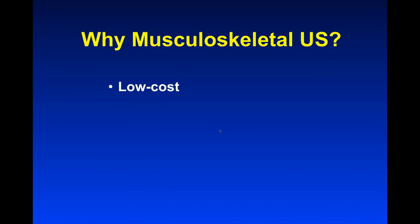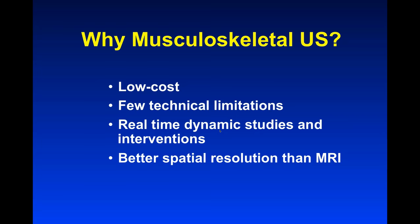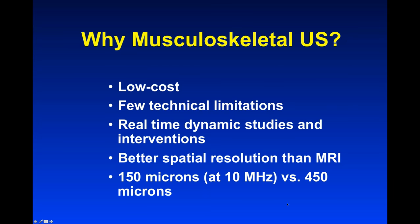First of all, it's a low-cost tool, and in this era of cost containment that's a very important benefit compared to MRI. It has few technical limitations — you can get good studies on just about everybody. You can perform real-time dynamic studies and interventions. It also has better spatial resolution than MRI. Even using a 10 megahertz probe, your resolution is about 150 microns, whereas our shoulder MRI protocol is about 450 microns — so literally three times better spatial resolution.